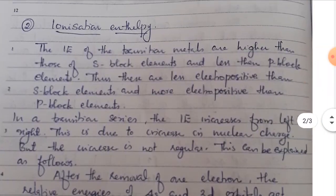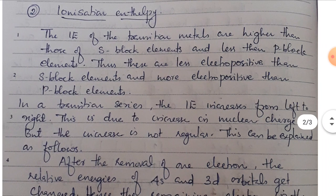Then comes ionization enthalpy. The ionization enthalpy of transition metals is higher than those of s-block elements and less than p-block elements. Thus they are less electropositive than s-block elements and more electropositive than p-block elements.